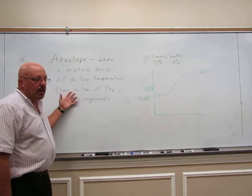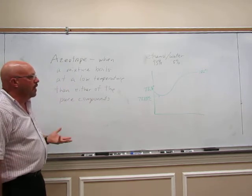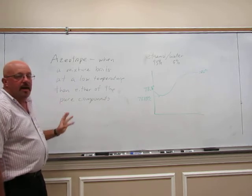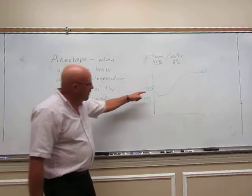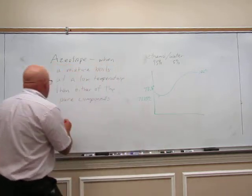Oftentimes when we are distilling, if there's some water present in our mixture, we will see an azeotrope with the water. And so that's the little dip. So again, this azeotrope is typically due to water.